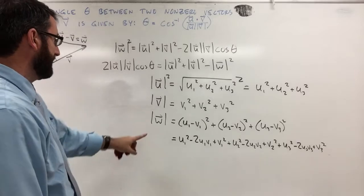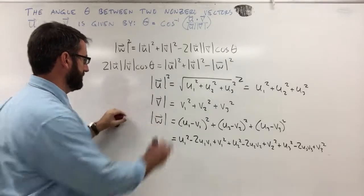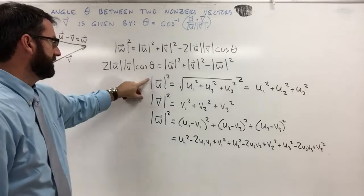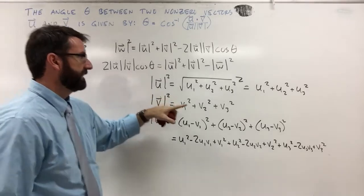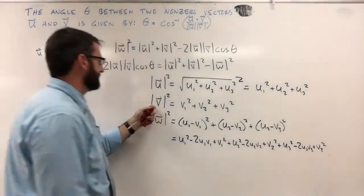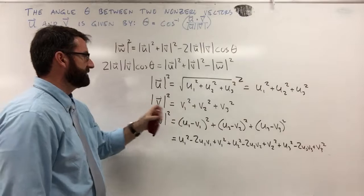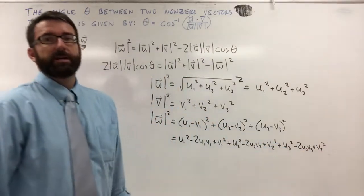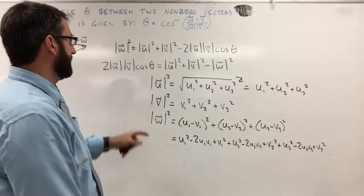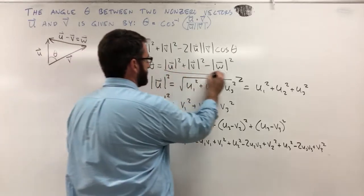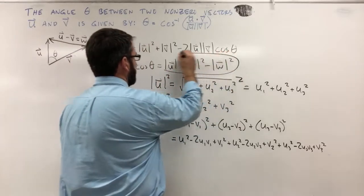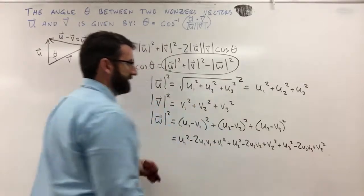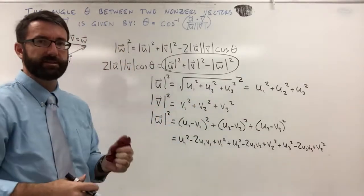So now we have: the magnitude of u squared is u1² + u2² + u3², the magnitude of v squared is v1² + v2² + v3², and the magnitude of w squared is the full expanded form of (u minus v) squared. Let's take this and add them all up in terms of these components.